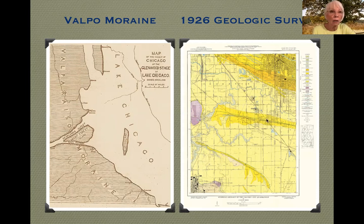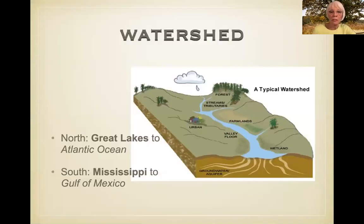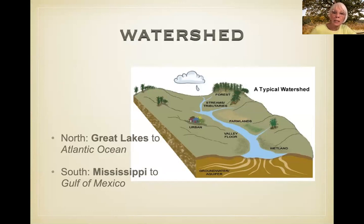The Valpo Moraine begins in the western part of Michigan, follows the Lake Michigan shore all the way through Indiana, through Illinois, and up across the Wisconsin line. So we have this glacial till that goes all the way around the lower portion of the lake. The Valpo Moraine has a continental divide, just like the Rockies do.